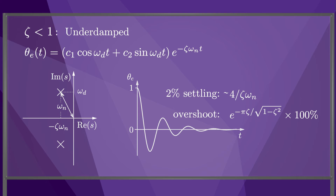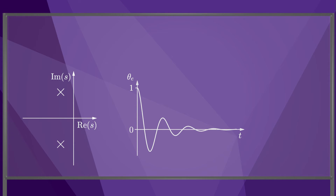Plotting the responses on top of each other, we see that if the two roots are complex conjugates in the left-half plane, we get an underdamped decaying sinusoidal error response. If the two roots are real but not equal, we get an overdamped response dominated by the slow root. If the two roots are coincident, we get a critically damped response, which in this case converges faster to zero than the overdamped response because the roots are faster than the slow roots of the overdamped response.